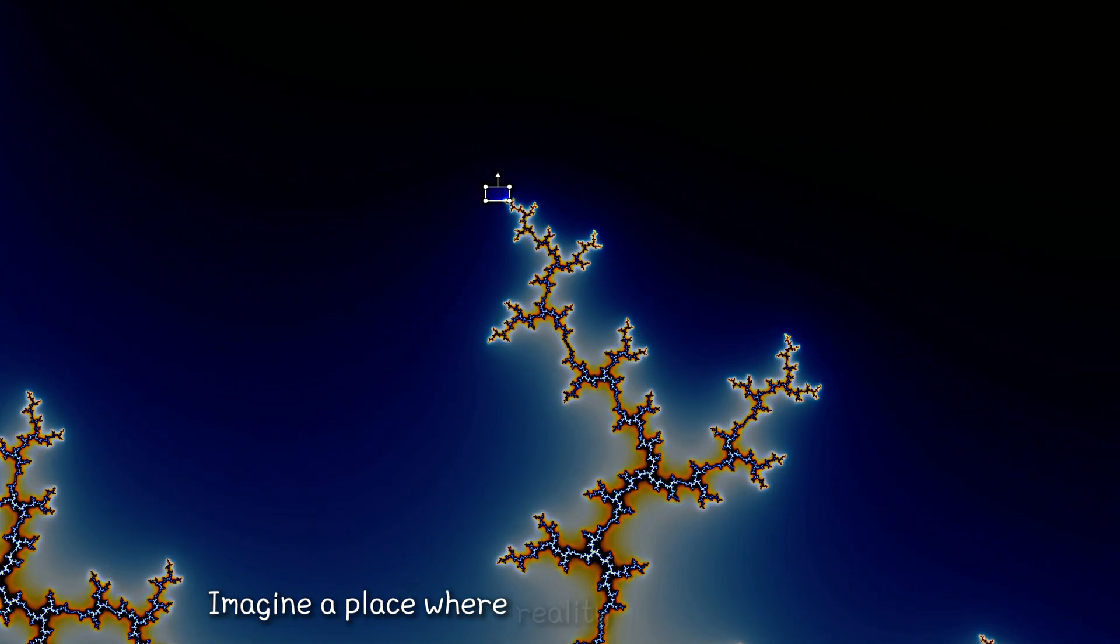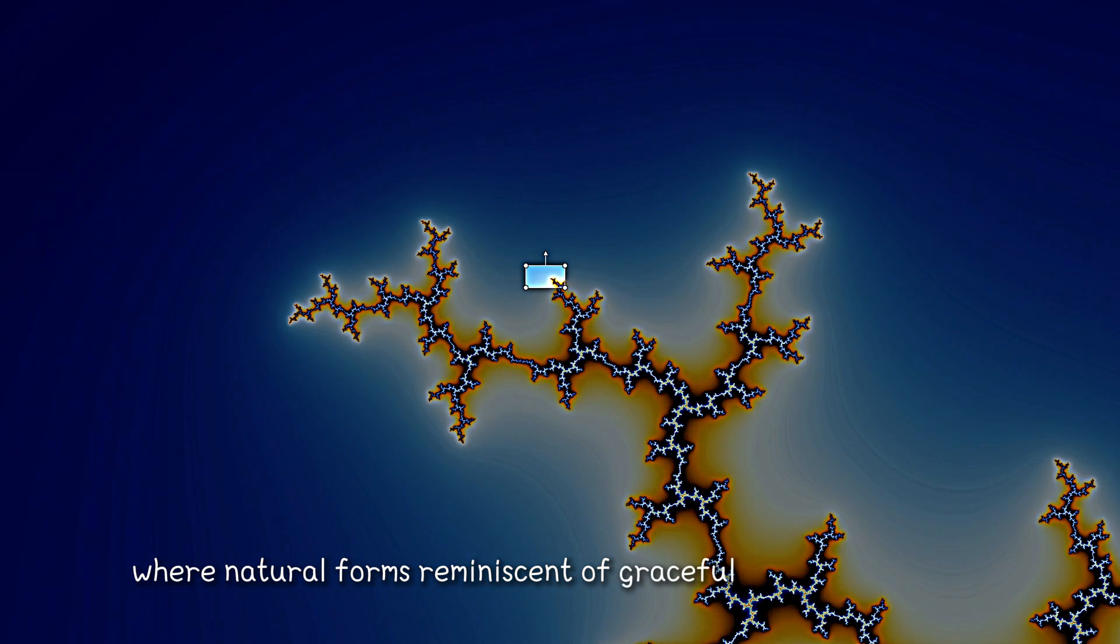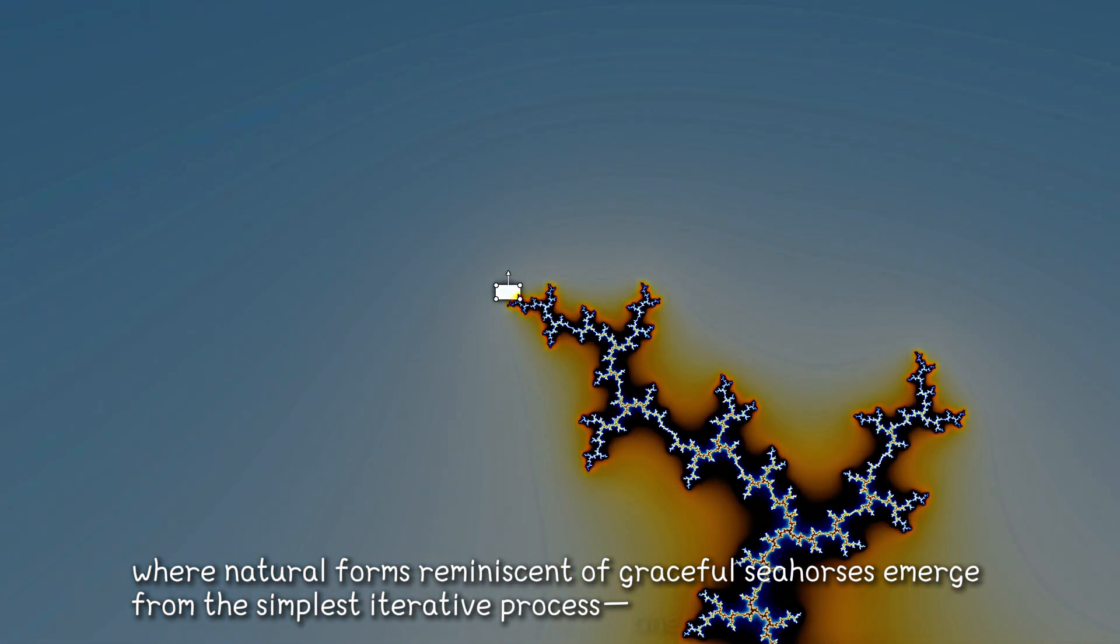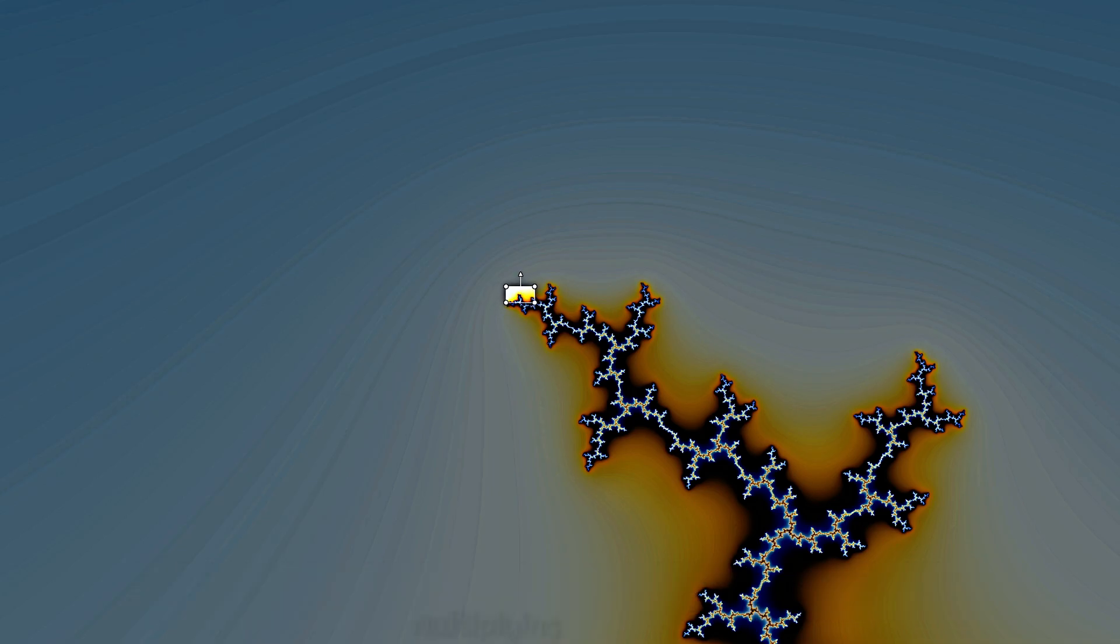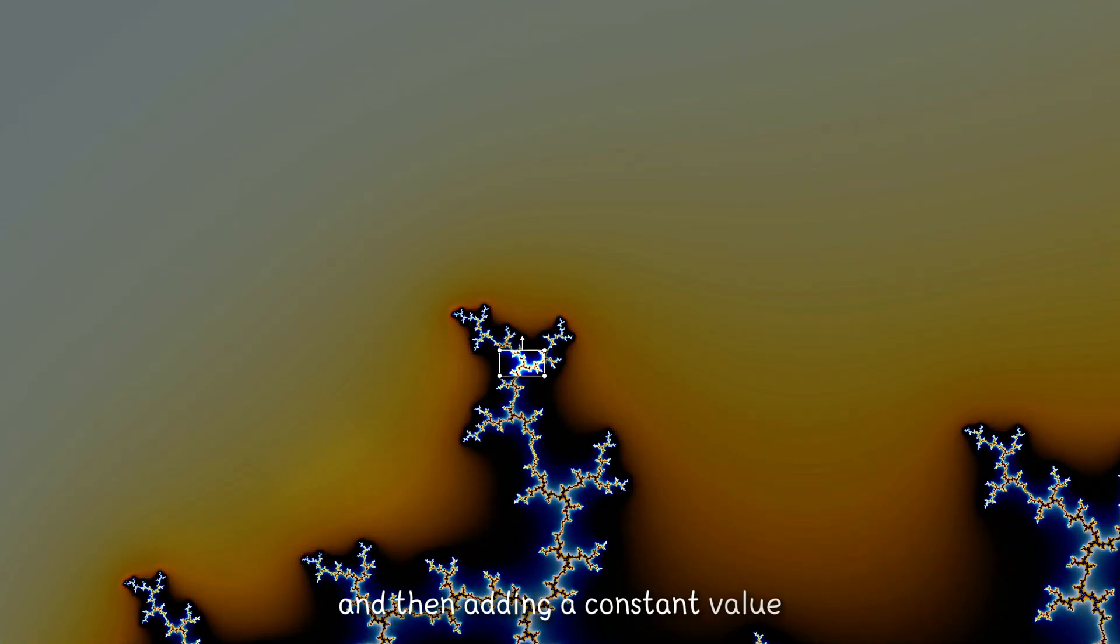Imagine a place where reality blurs into abstraction, where natural forms reminiscent of graceful seahorses emerge from the simplest iterative process—one that involves taking a number, multiplying it by itself, and then adding a constant value, over and over again.